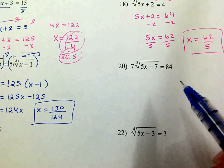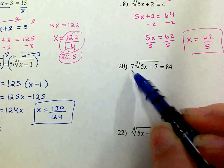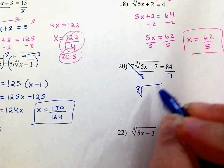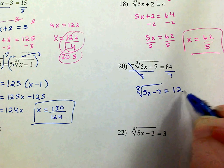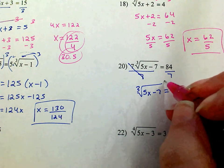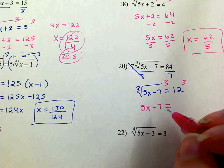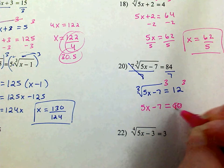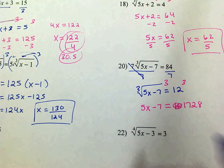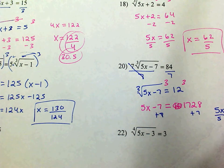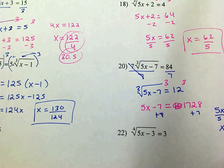On 20, I want to go ahead and get rid of the 7 by dividing. So I'm left with the cube root of 5x minus 7 equals 12. In order to get rid of a cube root, we cube. So I'm left with 5x minus 7 equals 12 cubed, which is 1,728. Then I'm going to add 7, so 5x equals 1,735, and divide by 5. x equals 347.